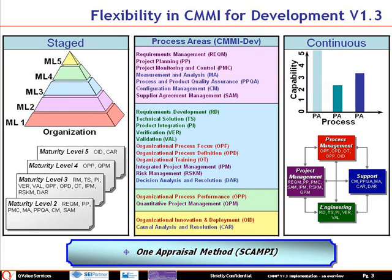On the right-hand side is the continuous representation, where the process areas are organized into groups: process management, project management, engineering, and support. The choice of representation for implementation depends on the business prerogative.